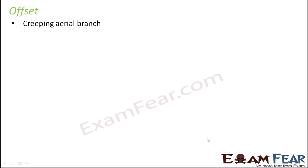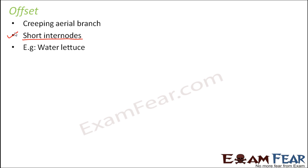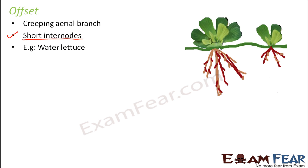Let us look at the last type of creeper, which is offset. Offset is a creeping aerial branch, so most of the time it is above the ground. They have short internodes, unlike runners which have remarkably long internodes. A very good example of offset is water lettuce — it grows horizontally, and at each apex it produces a tuft of leaves above and a cluster of roots below. It keeps creeping aerially in this pattern.